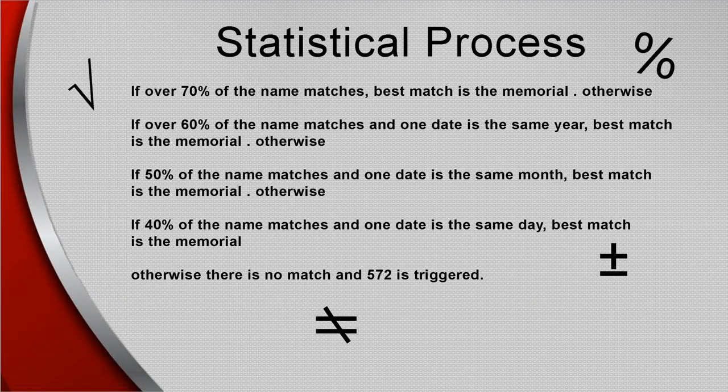Matching two databases — WikiTree and Find a Grave — driven by hundreds of thousands of people, creates a complex process of statistics to determine if the Find a Grave link is on the correct profile. It is summarized as follows.